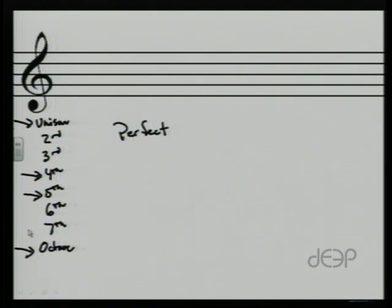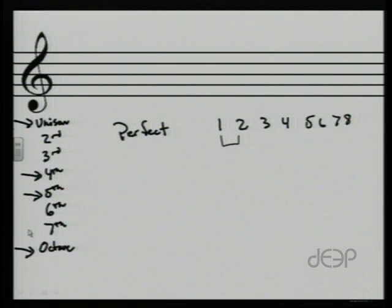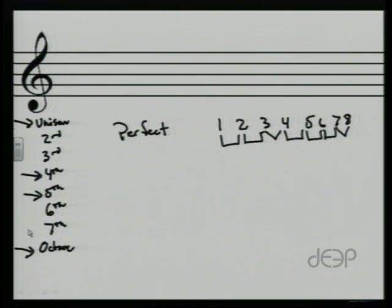Let's start with an interval of an octave — this is kind of an easy one. All of these intervals grow from our good old major scale. Remember that a major scale is whole, whole, half, whole, whole, whole, half. It seems like everything goes back to this. A perfect octave is the distance from the first to the eighth note in a major scale.